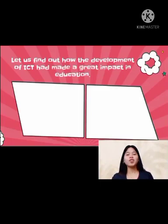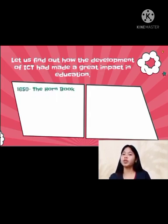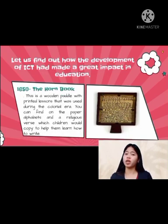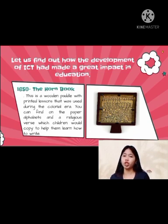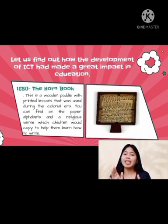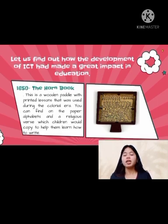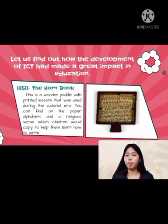Let us find out how the development of ICT made a great impact in education. In 1650, the Horn Book — a wooden paddle with printed lessons used during the colonial era. You could find alphabets and a religious verse on the paper, which children would copy to learn to write. A wooden frame mounted on a sheet of white paper was protected by clear horn-plated sheets. The very first papers were made of vellum; these days, they are made of paper.